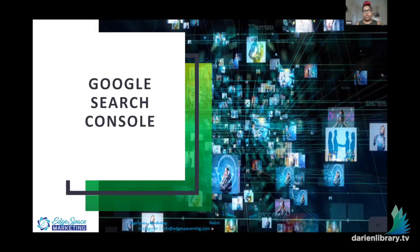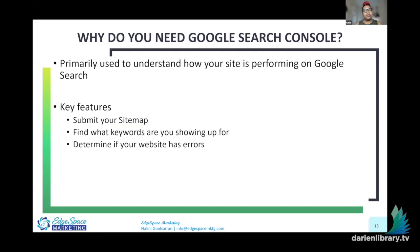Now let's talk about Google Search Console. You've set up your analytics and are collecting data on how people are getting to your website and how long they're spending. Now we're going to figure out how your site is performing in Google search — this is the key part of your SEO. This is where you submit your sitemap, find the keywords you're currently performing for, and determine if your website has errors. Broken links and similar errors are actually negative on your SEO ranking score, so you want to identify and fix those.